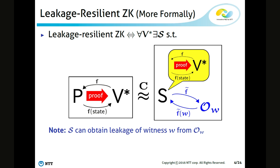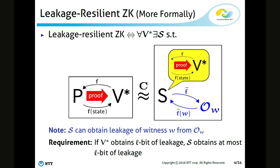In the setting of leakage resilient zero knowledge, the goal of the simulator is to simulate a cheating verifier's view, including leakage, by obtaining some information about the witness from the leakage oracle. To ensure this definition guarantees meaningful security, we require that the simulator obtain at most the same amount of leakage as the verifier. So if the cheating verifier obtains a little bit of leakage by making leakage queries, then the simulator can obtain at most a little bit of leakage from the leakage oracle.